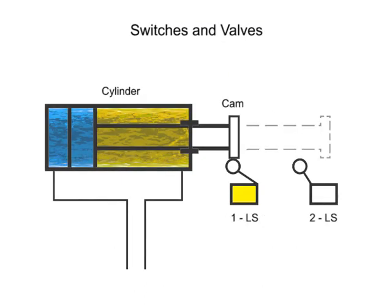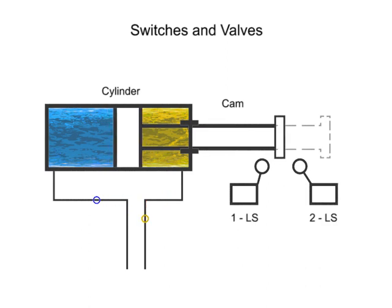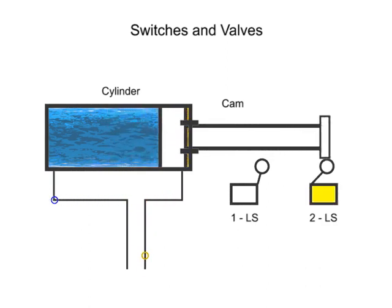As with fluid valves, electrical switches also have a normal state. In this case, the limit switch is operated by the movement of the cylinder rod. When the cylinder rod extends, it moves a cam which makes contact with a lever that actuates the appropriate switch.